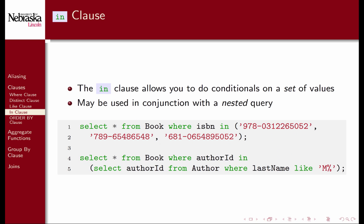The in clause can be used to match a set of values. The first example would match any book record with the given three ISBN values. It would be equivalent to a conditional that uses three conditions connected with OR operators. The real power of the in clause is illustrated in the second example where we use a nested query. The subquery selects all author IDs of authors whose last name begins with M. We can then select all books whose author IDs are in that result set.